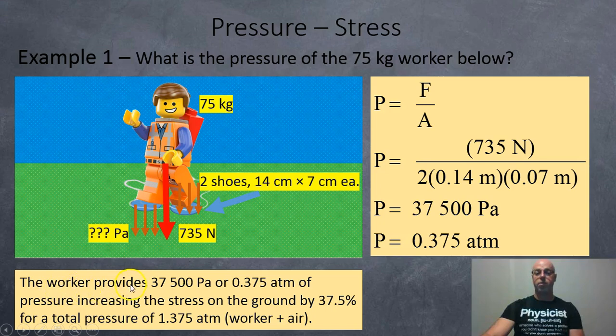So this worker is providing 37,500 pascals, or 0.375 atmospheres if we convert it to atmospheres, which increases the stress on the ground by about 37.5%. So now the total stress on the ground is the one atmosphere from the air plus the 0.375 from the worker.